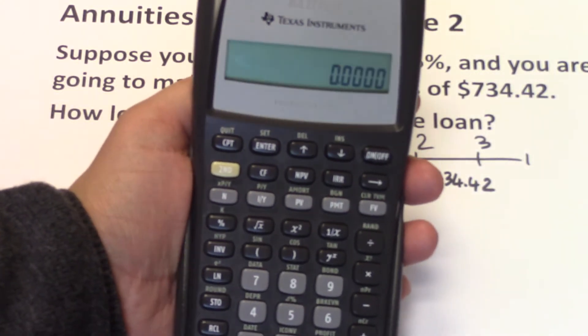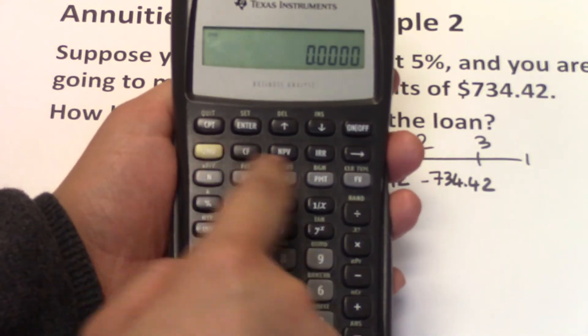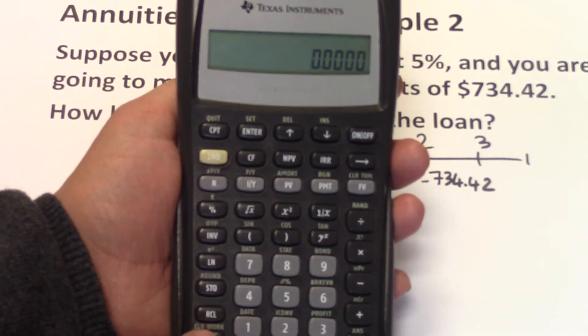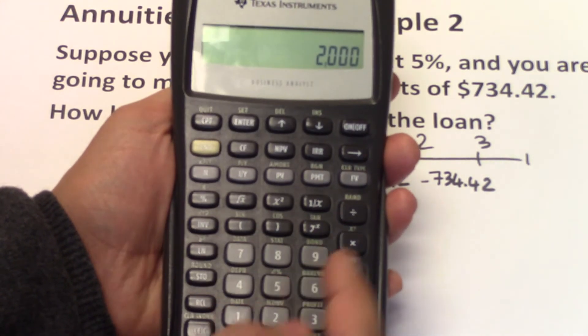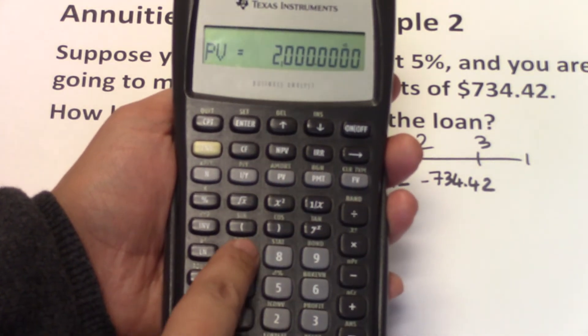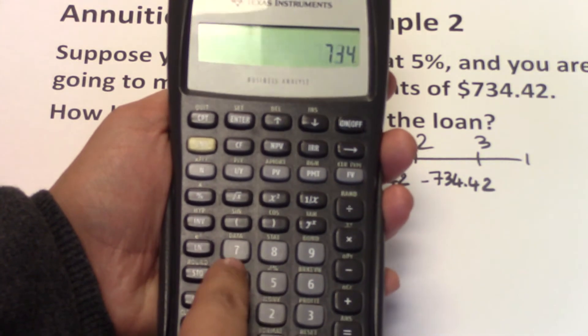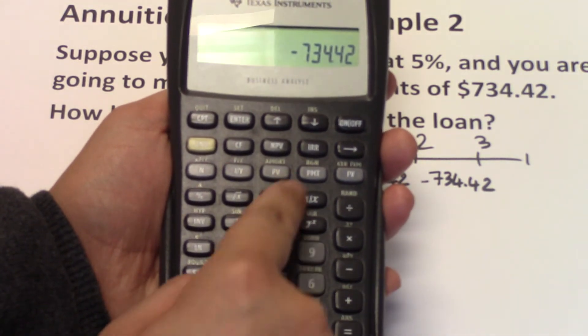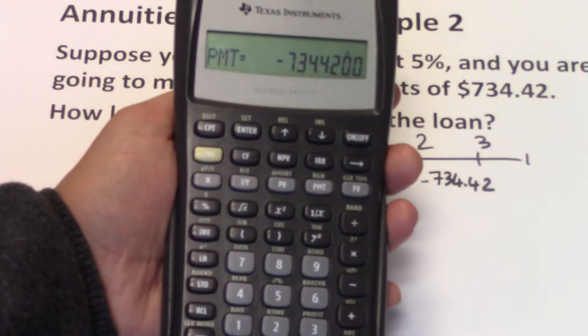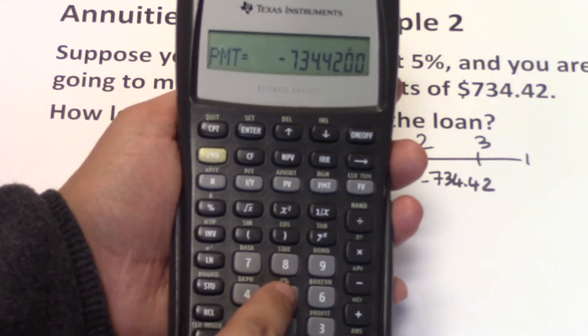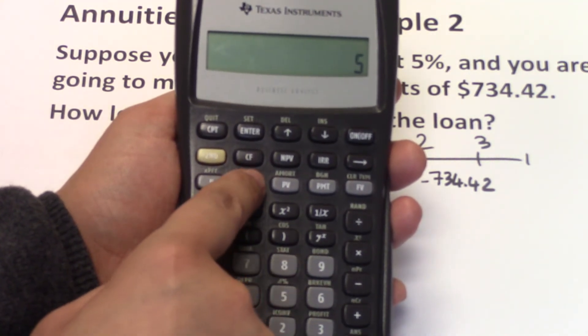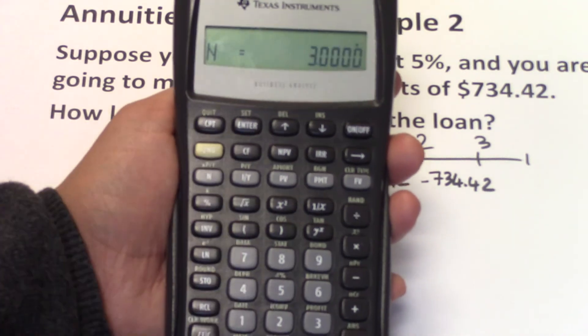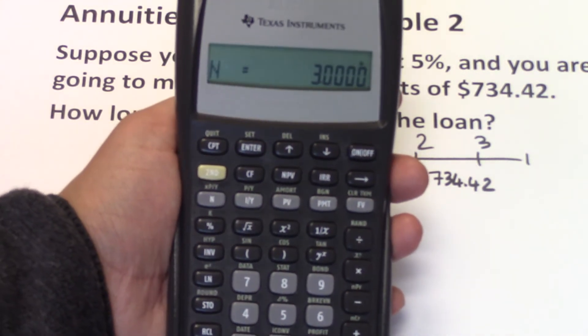So to input, all we have to do now is just input our variables. So 2nd FV, 2nd CEC, $2,000 is the PV, 734.42, I'll put it as a negative number, is your PMT. 5 is the I over Y and then we compute N. And here it shows that N equals to 3.